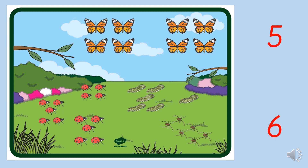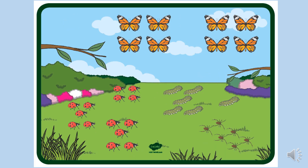Well done — that was a good estimate. Five was very close to six. So now I'd like you to have a go. We've looked at estimation this week, so we should be able to do this easily. I want you to look at the spiders here at the bottom of the screen, and very quickly — remember, don't count — have a quick estimate: how many spiders do you think there are? Say your number out loud.